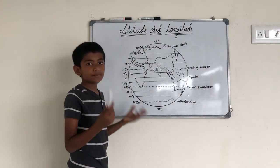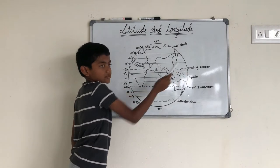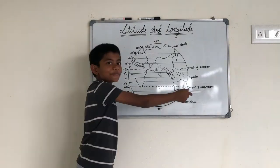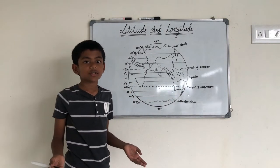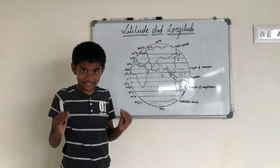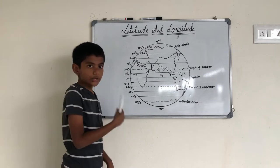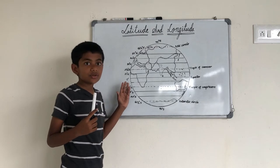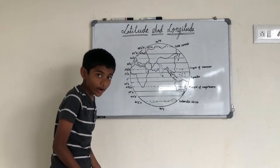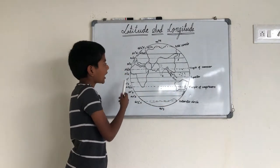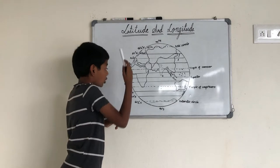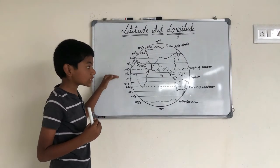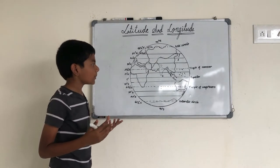The degrees of these important latitudes are: the Tropic of Cancer is 23.5 degrees north, and the Tropic of Capricorn is 23.5 degrees south. There are 181 latitudes but I have only drawn a few. These latitudes run from east to west and they are marked as north or south. These degrees indicate how far north or south a location is.